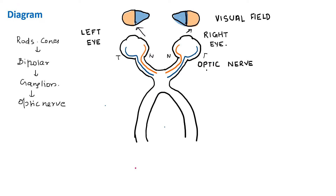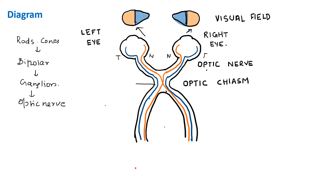After this the optic nerve forms the optic chiasm. At the optic chiasm, the temporal fibers pass uncrossed but the nasal fibers cross. You can see the nasal fibers crossing at the optic chiasm. After this they form what is known as the optic tract, which contains the uncrossed fibers of the temporal side as well as the crossed nasal fibers.